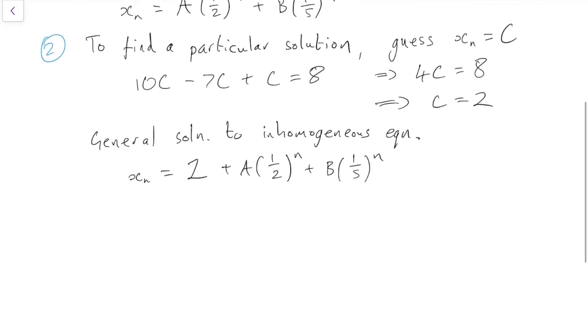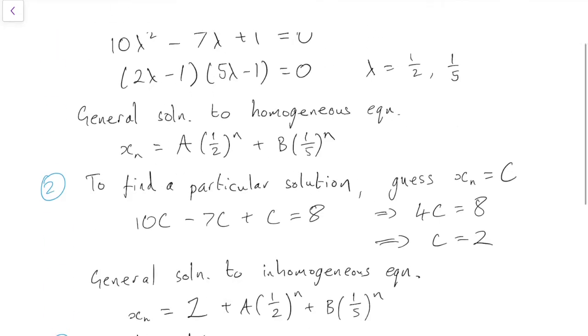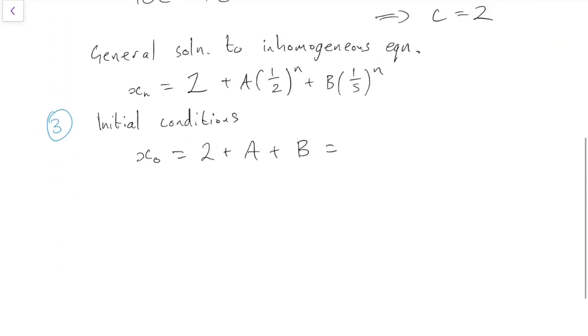And then finally, and always make sure to do this step last, we're going to use the initial conditions to find the values of A and B. So the initial conditions are x0, which is equal to 2 + A, a half to the 0 is 1, and a fifth to the 0 is 1. So 2 + A + B equals, and it's x0 equals 0, so A + B equals -2 if you prefer.